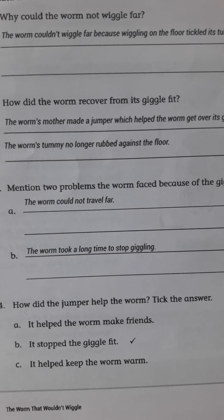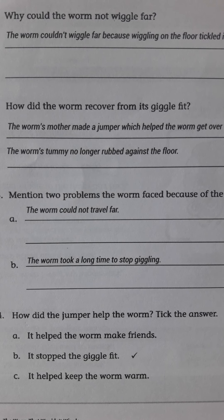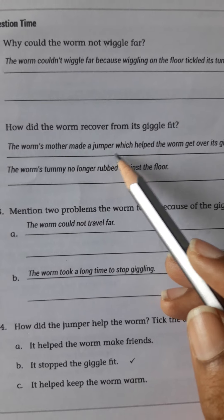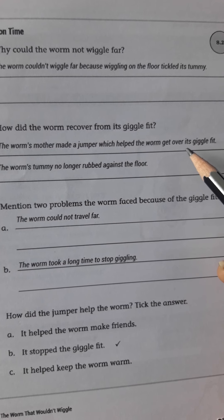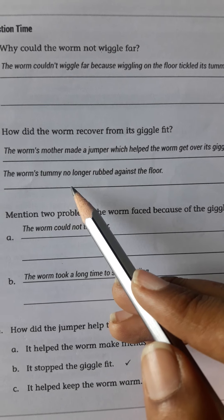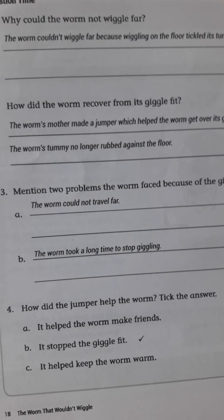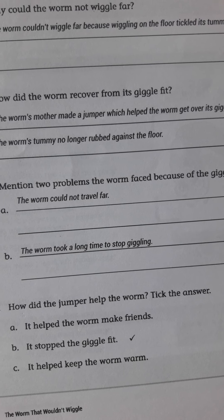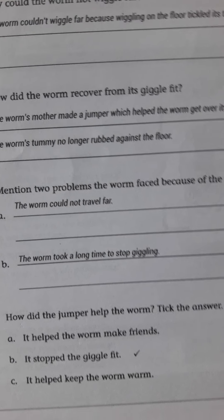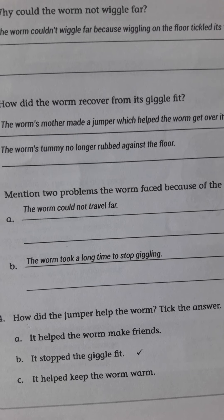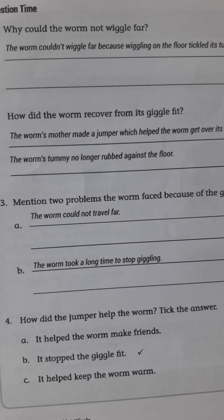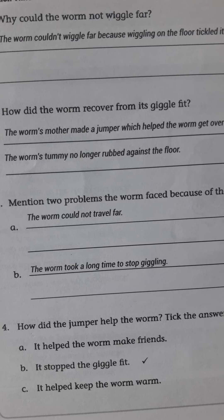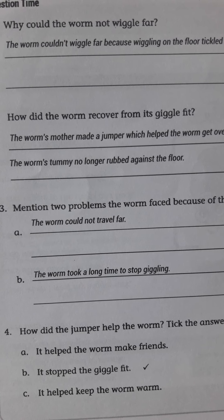Now read this one. The worm's mother made a jumper which helped the worm get over its giggle fit. The worm's tummy no longer rubbed against the floor. When the worm was wiggling on the floor without a jumper, the stomach would touch the floor and it would start giggling. When it wore a jumper, the stomach no longer touched the floor and the worm was free of the giggle fit.